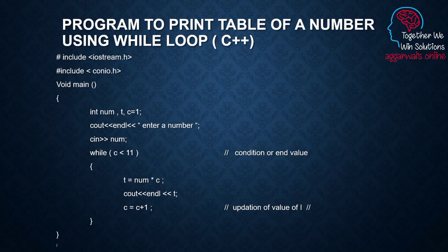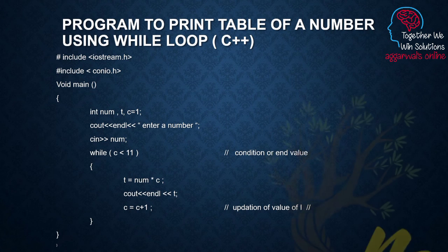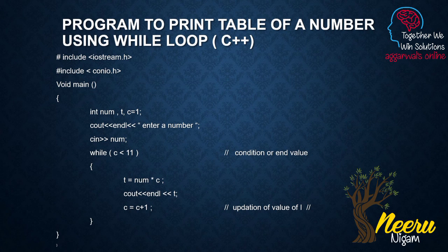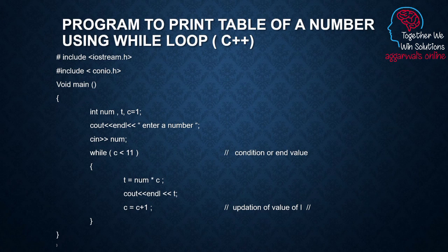Inside the loop, as long as the condition is true, a variable t stores the value of the expression num × c. So whatever value the user gave for num is multiplied by the current value of c, and that result is displayed. After displaying, we update the value of c, because c controls the loop — it decides how many times the loop runs. So we increase c by one: it starts at 1, then becomes 2, then 3, then 4, up to 10, and the moment it becomes 11 the loop is over.